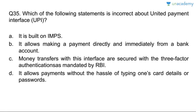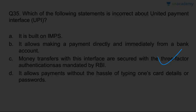Question thirty-five: which statement is incorrect about Unified Payment Interface (UPI)? It is built on IMPS. It allows direct and immediate payments from a bank account. Money transfers are secured with three-factor authentication mandated by RBI — this is wrong; it is two-factor authentication: password and one-time password (OTP) on your mobile phone. Answer is C.